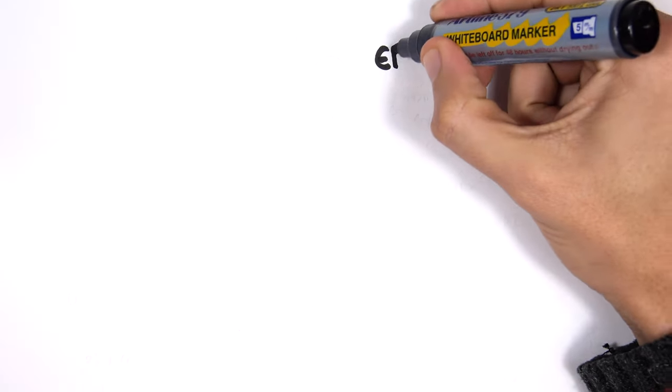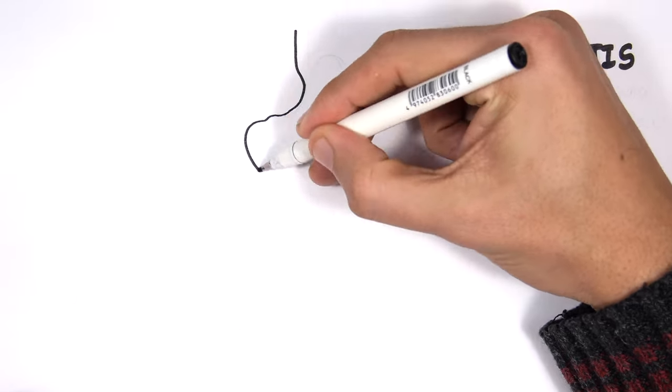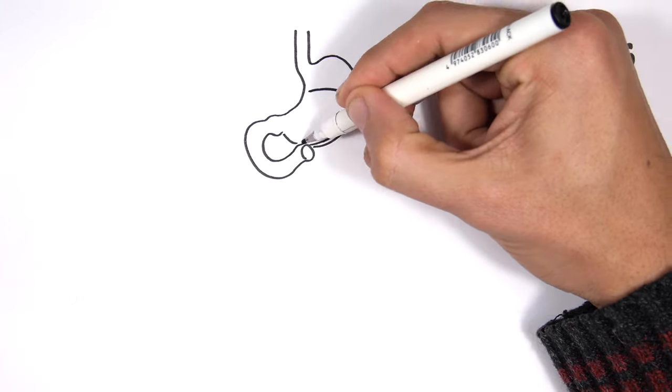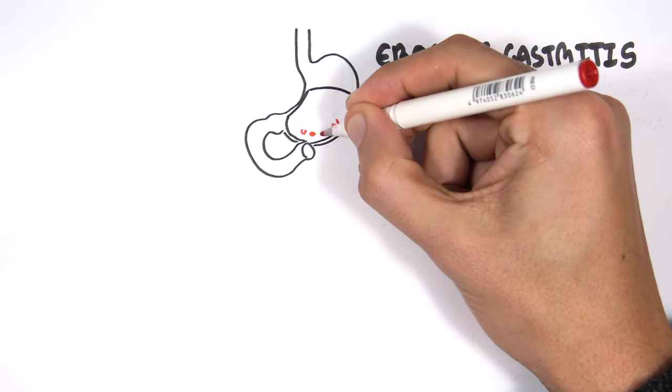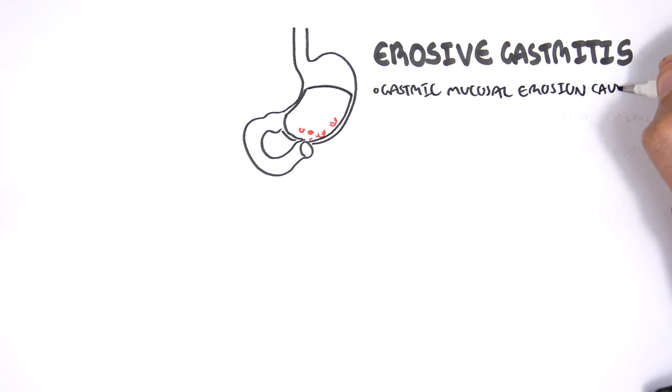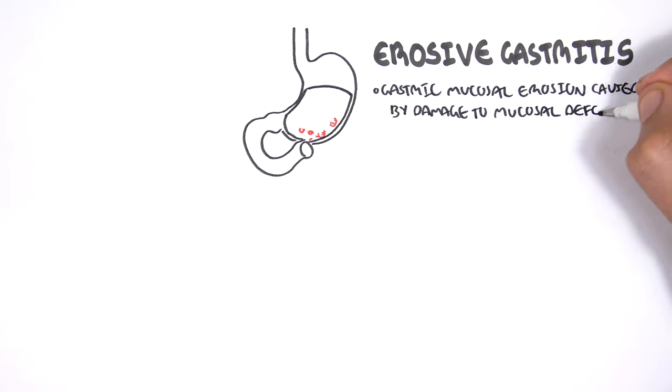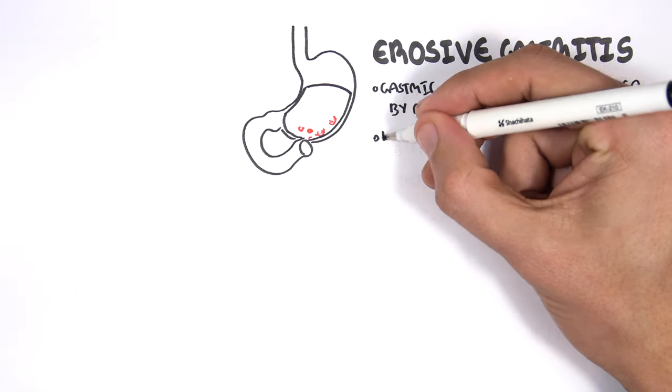The next cause of upper GI bleeds is erosive gastritis. Erosive gastritis has to do with the stomach. Looking into the stomach, we have essentially erosions within the layer. Erosive gastritis is gastric mucosal erosion caused by damage to the mucosal defense.